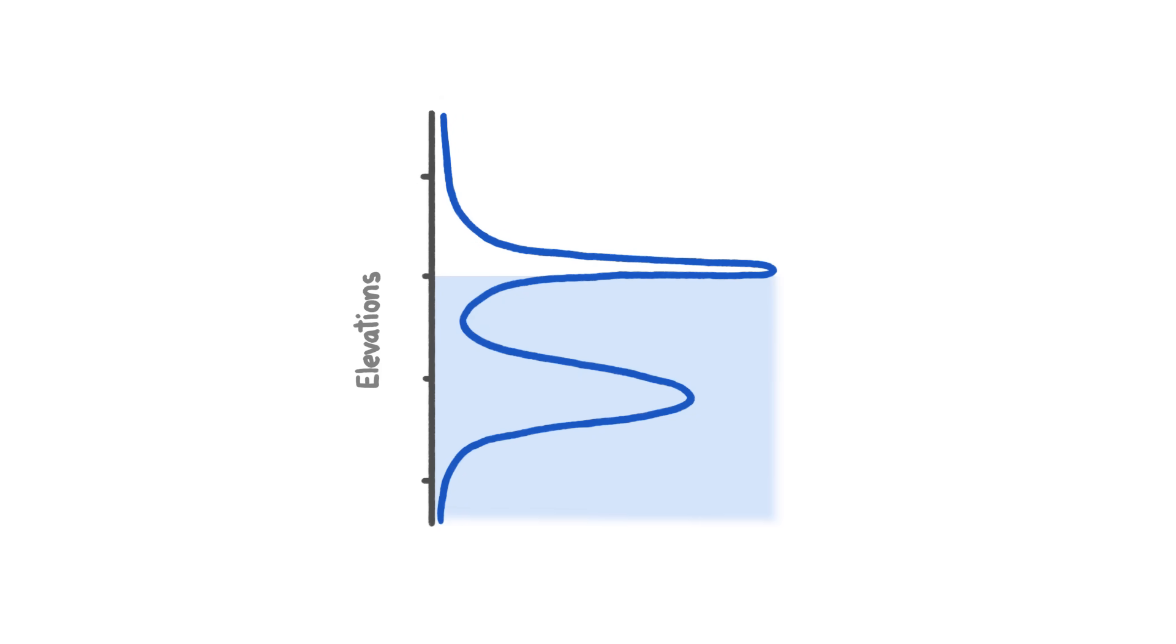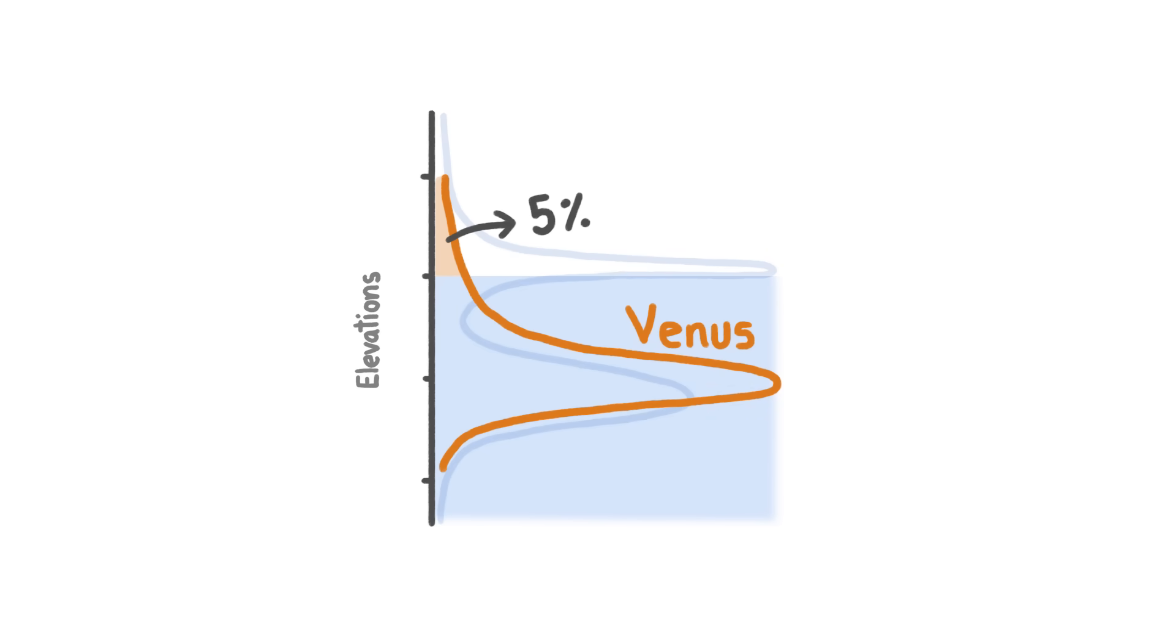And actually, if our planet's surface was more like Venus's, with its so-called normal distribution, only about 5% of it, an area a little smaller than Africa, would be above sea level, leaving not much space for landlubbers like us.